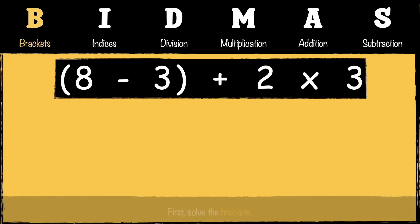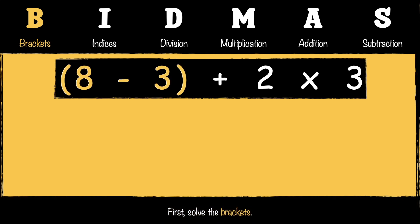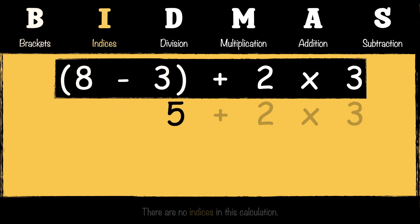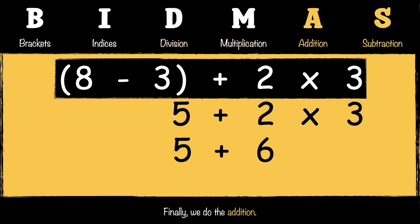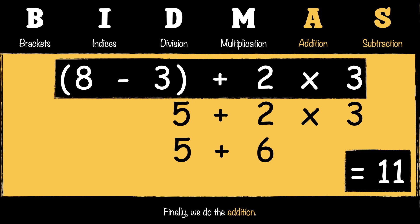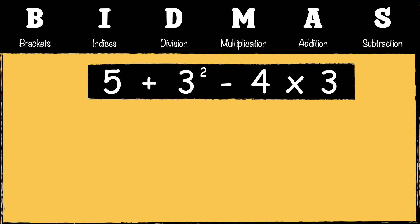Let's look at another example. We start with brackets: 8 − 3 = 5. There are no indices, so we move on to multiplication: 2 × 3 = 6. Finally we do the addition: 5 + 6 = 11. So the answer to this calculation is 11.